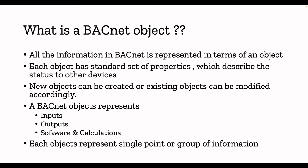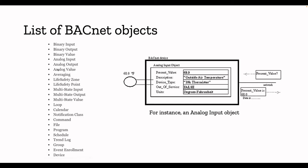New objects can be created or existing objects can be modified according to user needs. Basically, a BACnet object represents inputs, outputs, software, and calculations — all BACnet objects come under these categories. Each object represents a single point or a group of information. There are 23 widely used BACnet objects — it's not limited to 23, there are more, but in today's building automation and control network these 23 are the widely used ones. We will focus more on the analog input object.